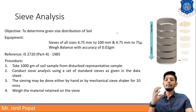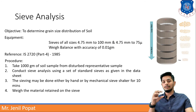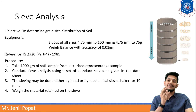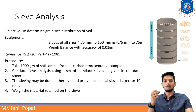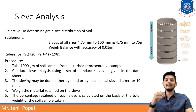The fourth step will be to weigh the material retained on each sieve. On each sieve there will be some material and you have to weigh that material. After weighing that material, you will get to know what are the sizes of the sieve. The percentage retained on each sieve is calculated on the basis of total weight of the soil sample.